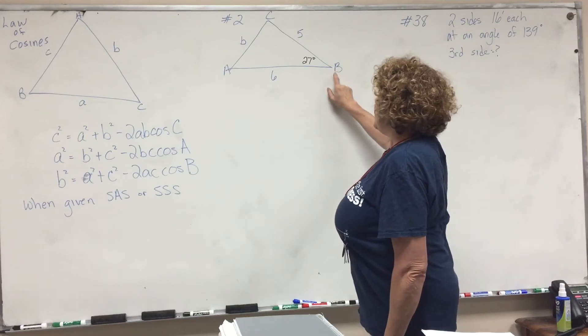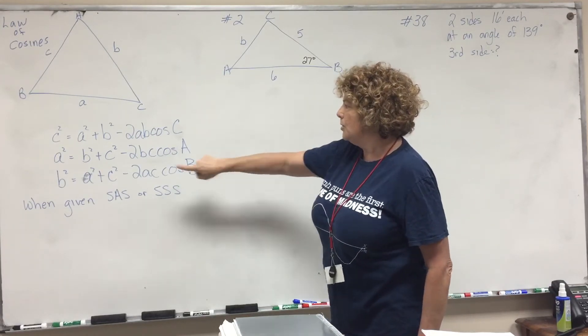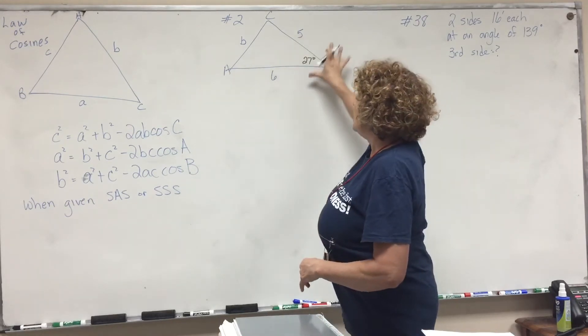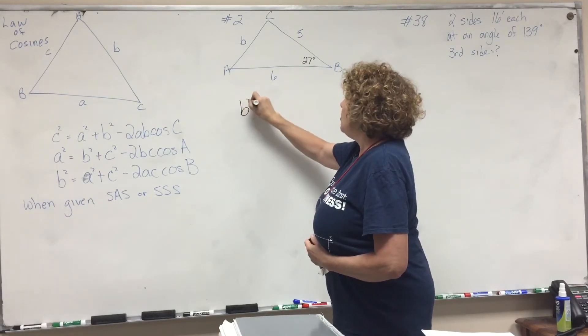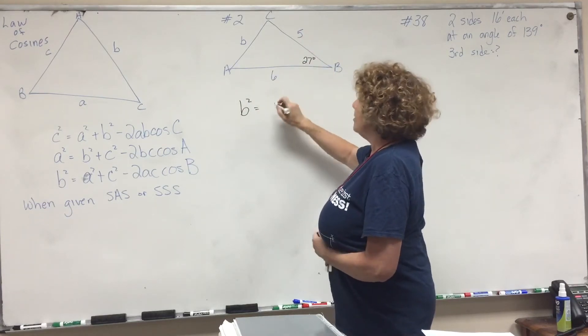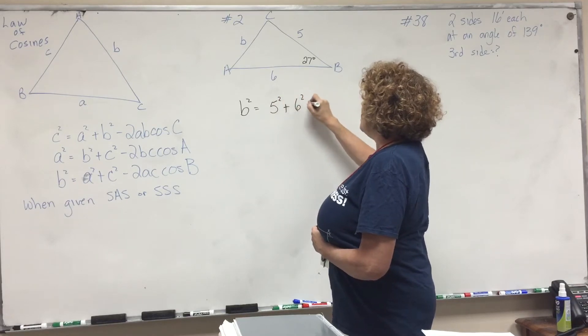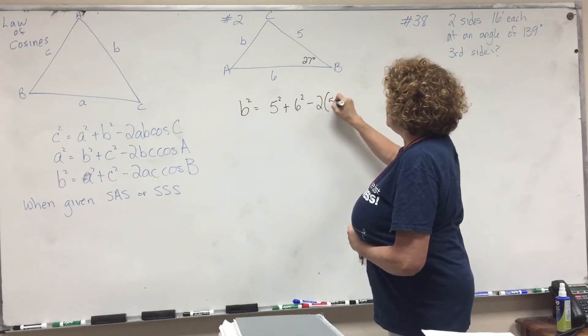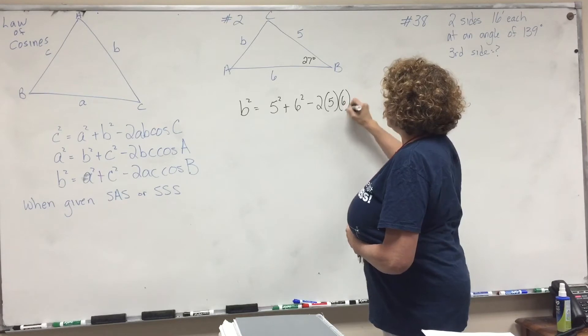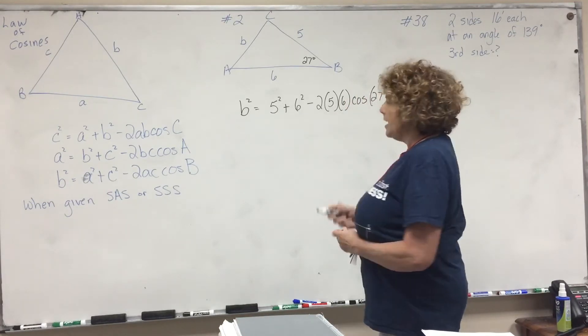So b is the angle we have. So we're basically going to use this equation because we're looking for b squared. So let's write it out, plugging in what we have. b squared equals a squared, which is five squared, plus six squared, minus two times five times six, times the cosine of 27.